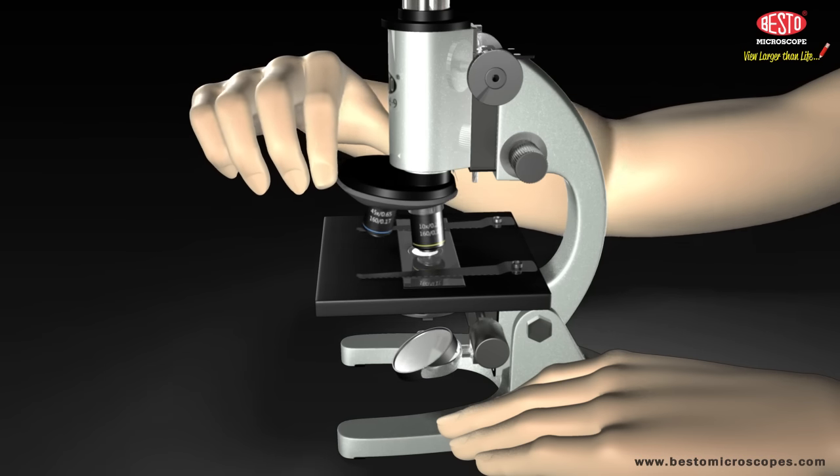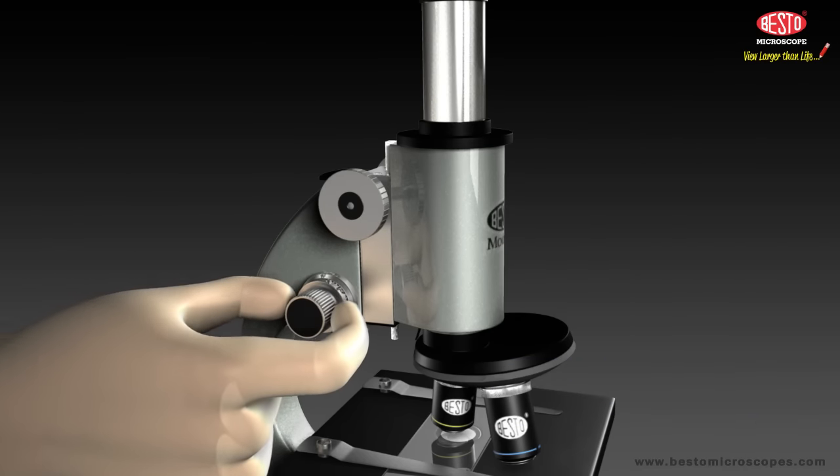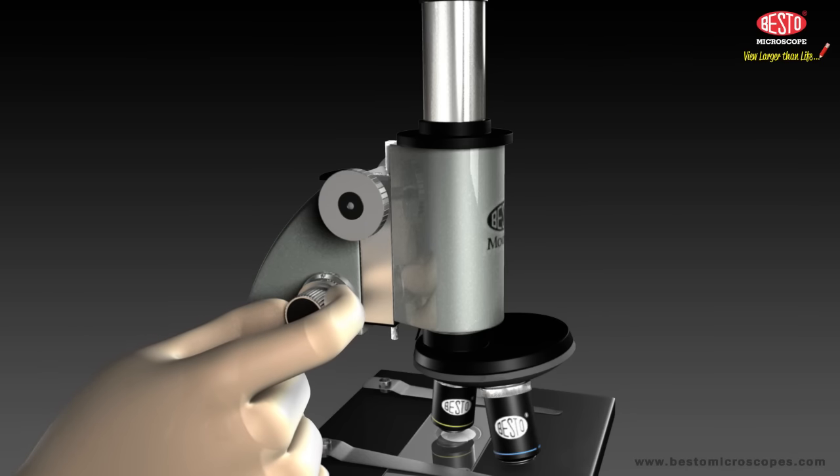You should be able to see the sample or slide through the high power objective, so you should only have to adjust the fine adjustment knob. Step 10: Now adjust the aperture control with the help of diaphragm.